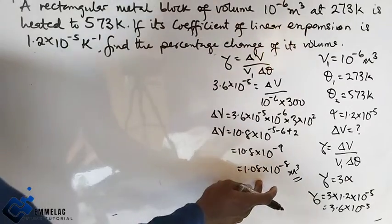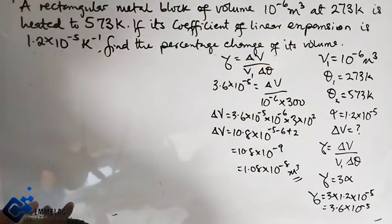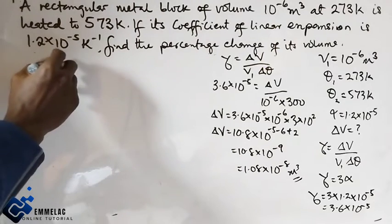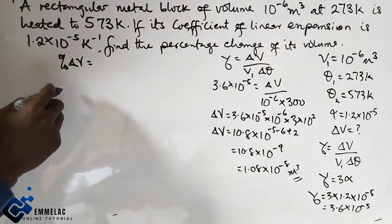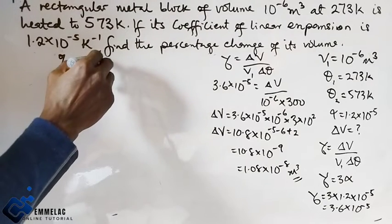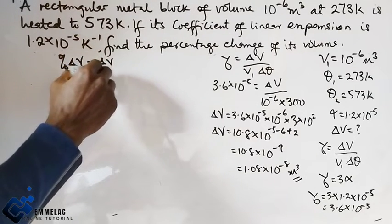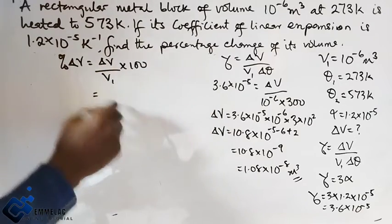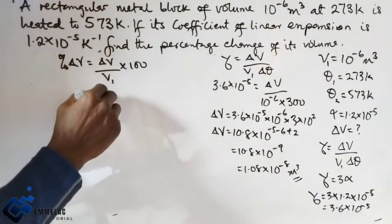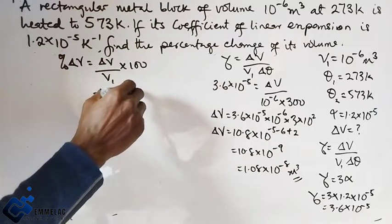The percentage change in volume is given by: (ΔV/V) × 100. So we have (1.08×10^-8 × 100)/10^-6.